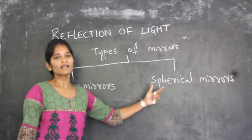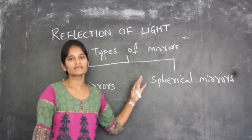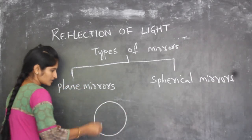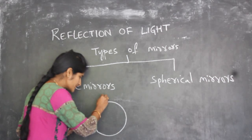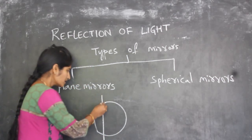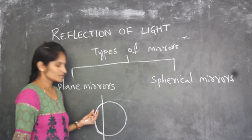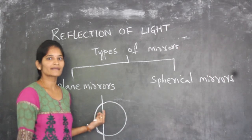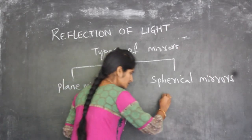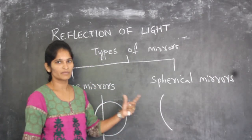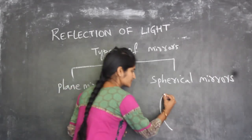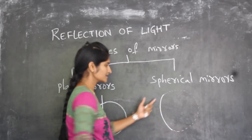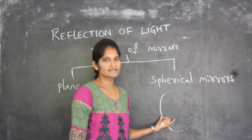So what do you mean by spherical mirrors? Spherical mirrors are nothing but curved surfaces. Suppose if this is taken as a sphere — a part of the sphere, if you cut it, this becomes a curved surface. This is called a curved mirror, which is called a spherical mirror. Because if you imagine this curved surface and draw a sphere, it takes the form of a circle. That is why these are called spherical mirrors.